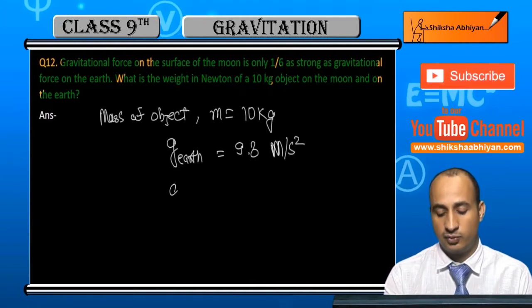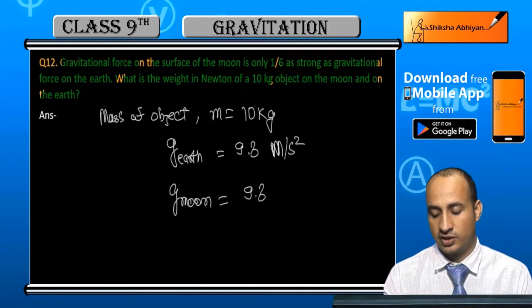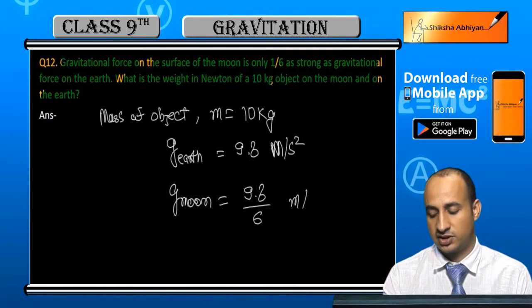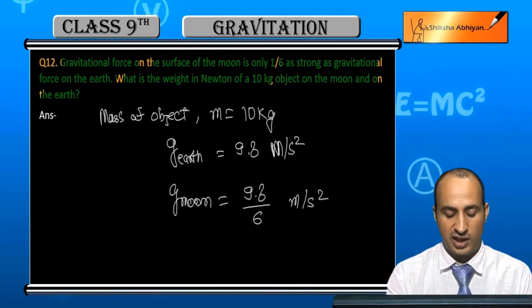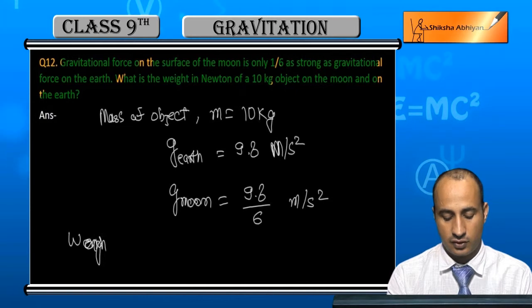And gravity of moon is equal to one-sixth, that is 9.8 by 6 meter per second square. Now if we calculate weight on moon.